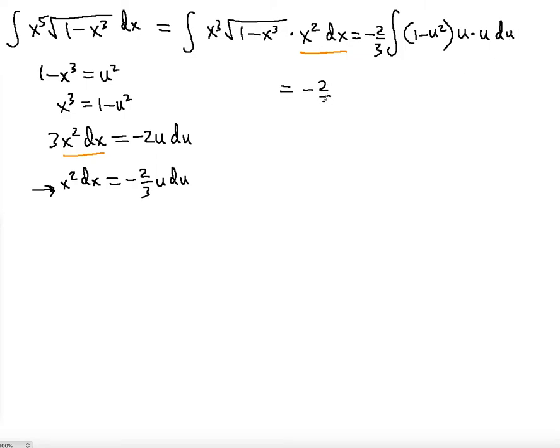So now what do we get? We get negative 2 thirds. This is u squared, so u squared minus u to the third du. So this becomes what? The power is 3, the bottom is 3, multiplied by 3 is 9. So negative 2 ninths u to the third.